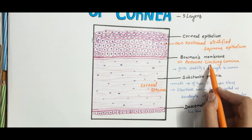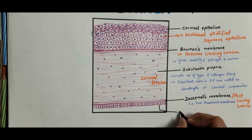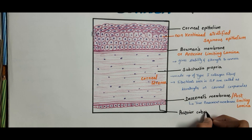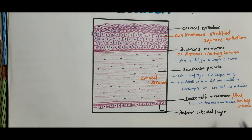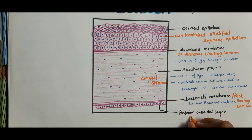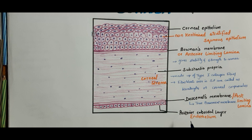Coming to the fifth layer of the cornea — it is the posterior cuboidal epithelium or the endothelium. The posterior surface of the cornea is lined by a single layer of flattened cells that constitutes the endothelium of the anterior chamber. This layer is in contact with the aqueous humor of the anterior chamber.